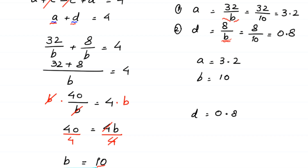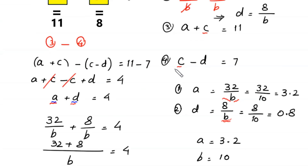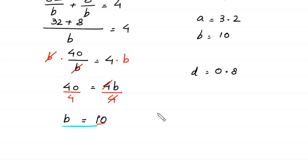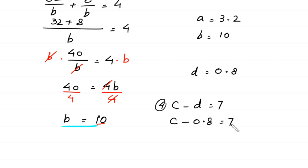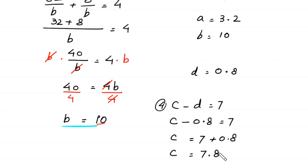Now to find the value of C, we use equation 4: C minus D is equal to 7. Substituting D equals 0.8, we get C minus 0.8 equals 7. Moving negative 0.8 to the right side, it becomes positive 0.8, so C equals 7 plus 0.8, which is 7.8.